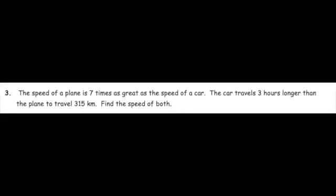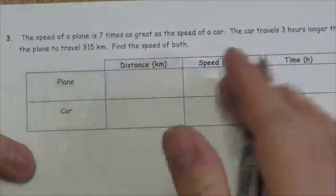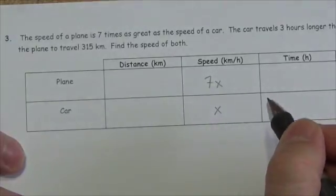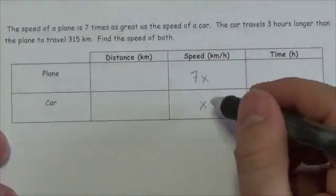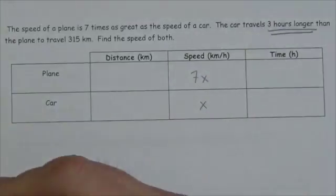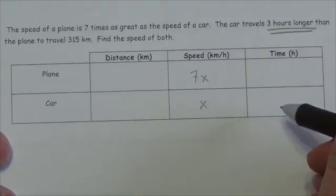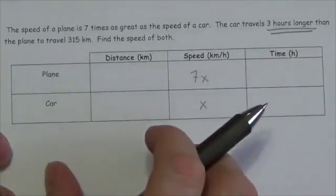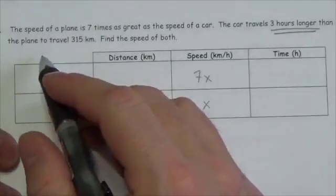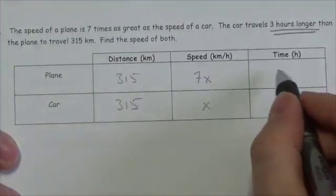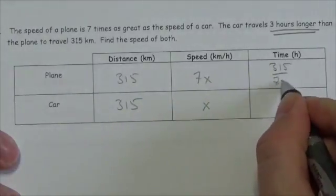The speed of a plane is seven times as great as the speed of a car. The car travels three hours longer than the plane to travel 315 kilometers. Find the speed of both. The plane travels seven times the car's speed — call the car's speed x, so the plane is 7x. The three-hour difference is a comparison between the two times, not a chart value.